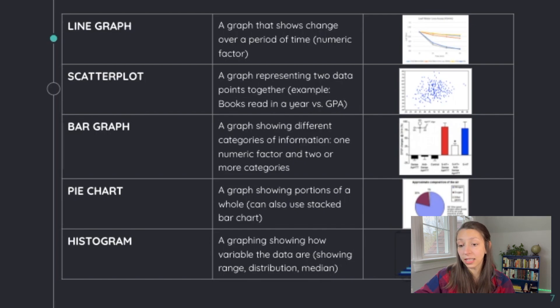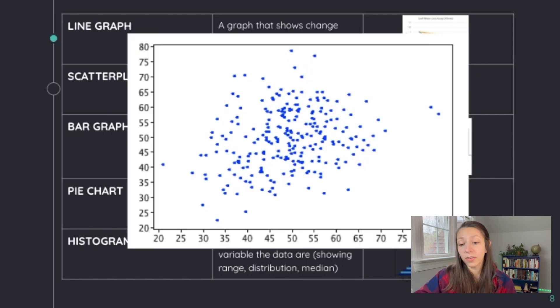A scatter plot represents two data points together. For example, books read in the year with your GPA. We can also draw trend lines on scatter plots, which if you're doing by hand, try to get the same number of points below the line as you have above the line, and then see if there's any sort of trend that appears within the data.